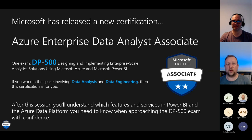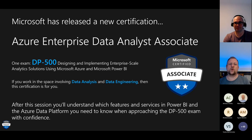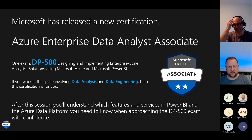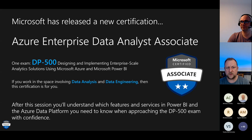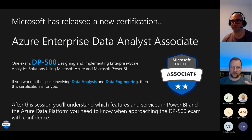The DP-500 is still relatively new — less than a year old. It was released into beta in April, stayed in beta for two to three months, and everyone who took the beta got their results around end of May or June. It then became generally available later in the year once they'd had feedback and shaped the content. This is Microsoft's great attempt to put data engineering and data analyst areas together.